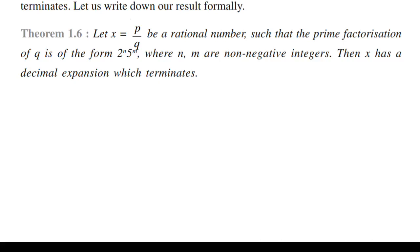Next, let us discuss Theorem 1.6 of your book. Let x = p/q be a rational number such that the prime factorization of q is of the form 2ⁿ × 5ᵐ, where n and m are non-negative integers. Then x has a decimal expansion which terminates.